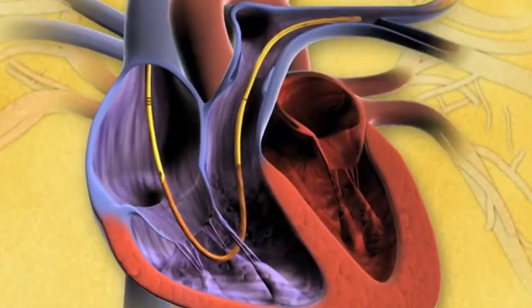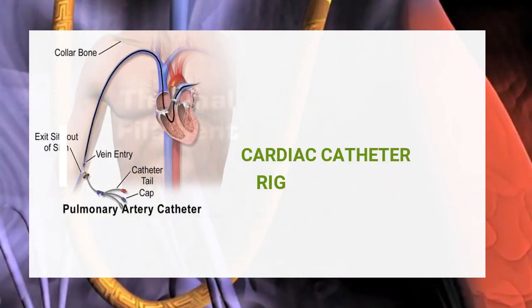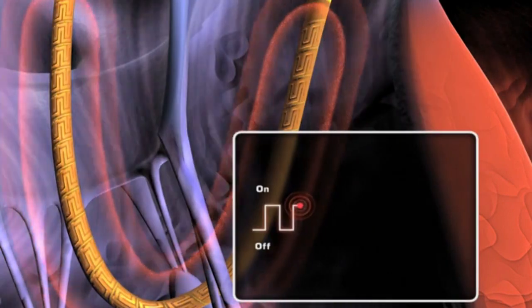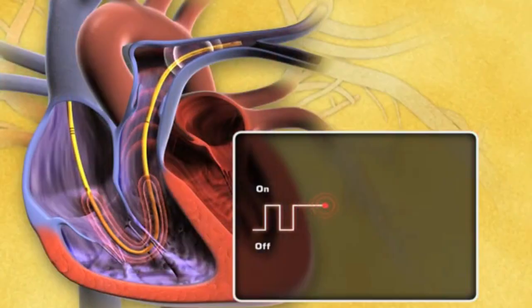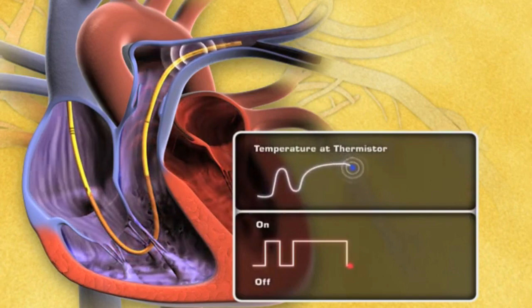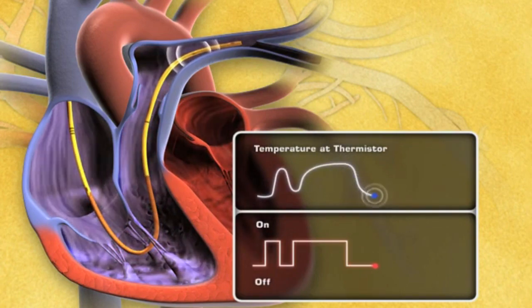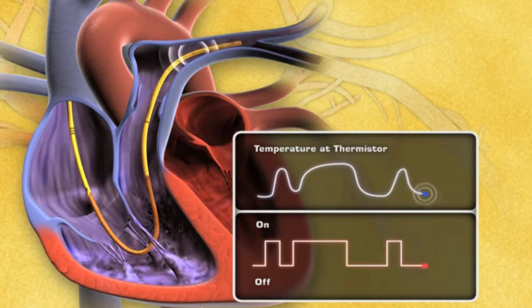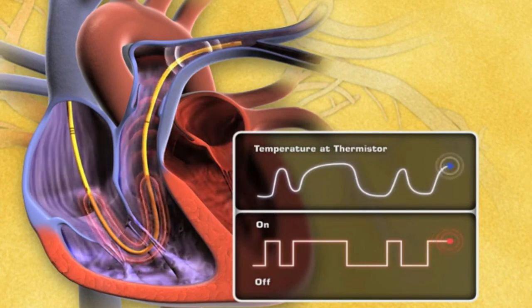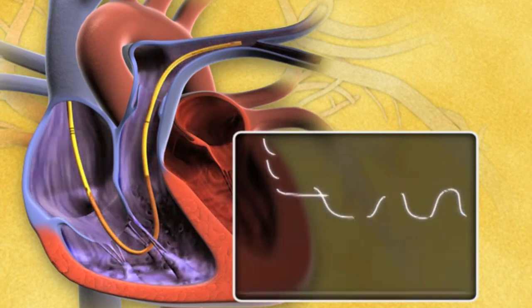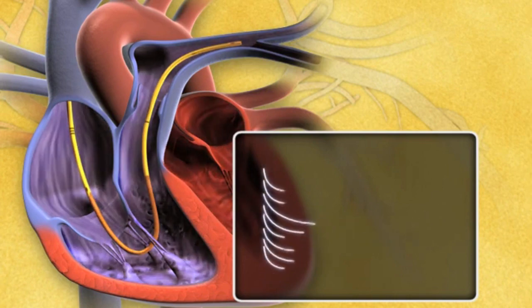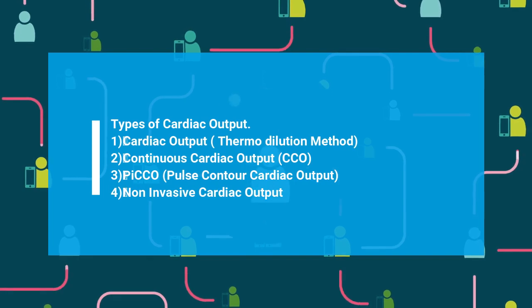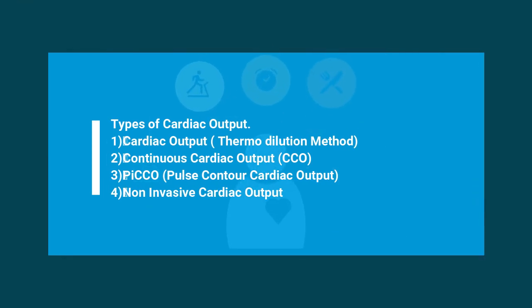Two types of probes can be used. One type is a catheter-tip probe, in which the sensor is mounted on the tip of the probe and the pressure exerted on it is converted to proportional electrical signals. The other is the fluid-filled catheter type, which transmits the pressure exerted on its fluid-filled column to an external transducer. This transducer converts the exerted pressure to electrical signals.